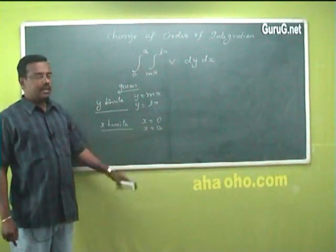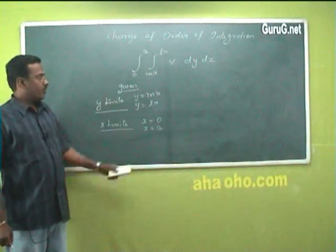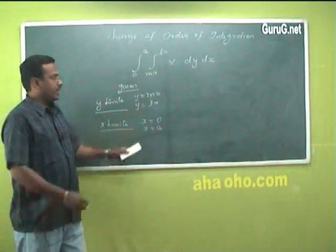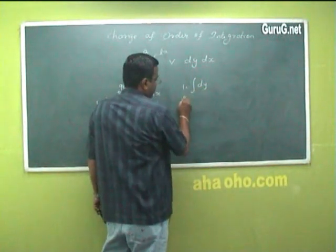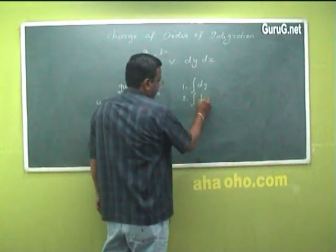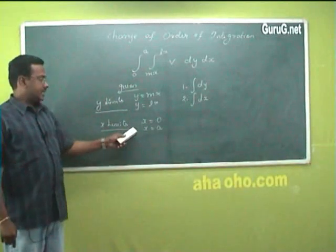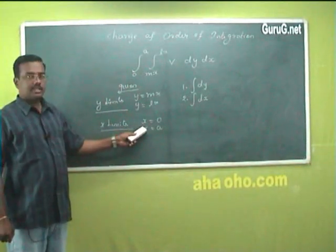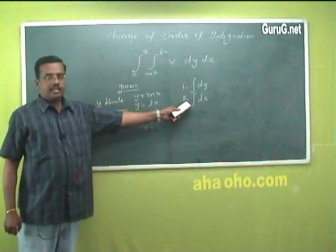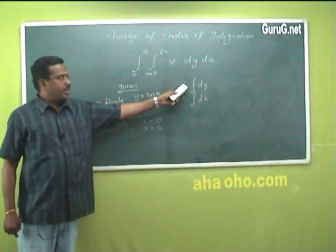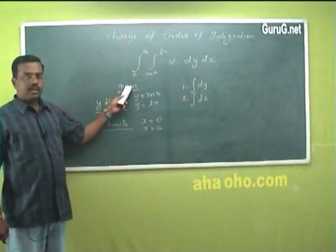The given order of integration is: first you have to integrate with respect to y, then you have to integrate with respect to x, because x limits are in terms of constants. Therefore, you have to integrate with respect to x lastly and first with respect to y. This is the given order of integration.